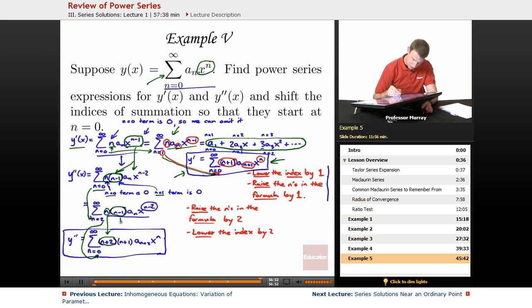That n minus 1 became n plus 1. That little n became an n plus 2. And that n minus 2 became an n. And again, if you sort of don't trust that, if that seems like magic, just expand out each one of these series. Expand out this one and expand out this one. Write out the first few terms of each one and you'll see that you get the same series either way.